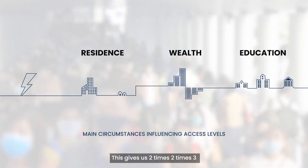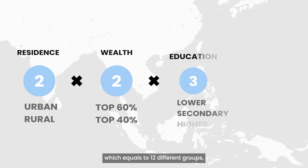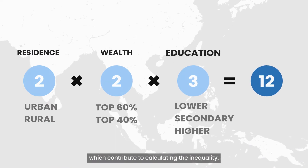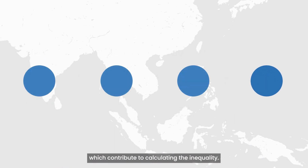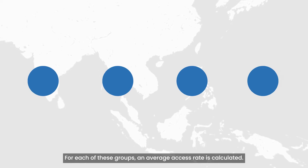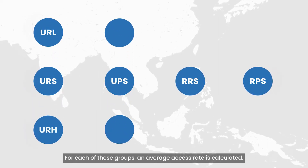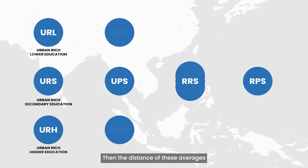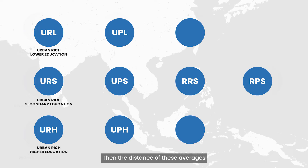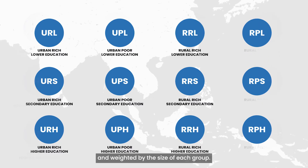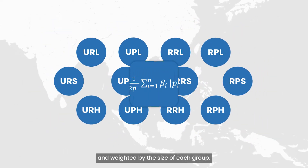This gives us 2 times 2 times 3, which equals 12 different groups, which contribute to calculating the inequality. For each of these groups, an average access rate is calculated. Then the distance of these averages to the overall average is summed up and weighted by the size of each group.